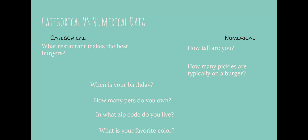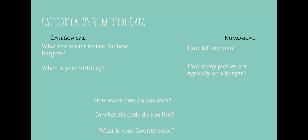When is your birthday? Is that categorical or numerical? That is categorical. If I tell you my birthday is March 22nd, I'm using words. There are some numbers in there, and sometimes when you write your birthday you might use numbers, but ultimately this is a category and I'm using words usually to describe it.